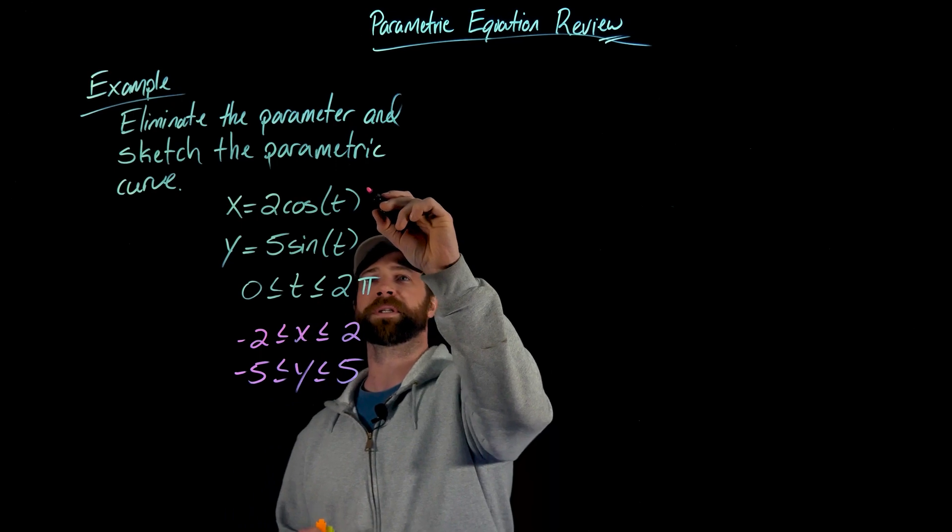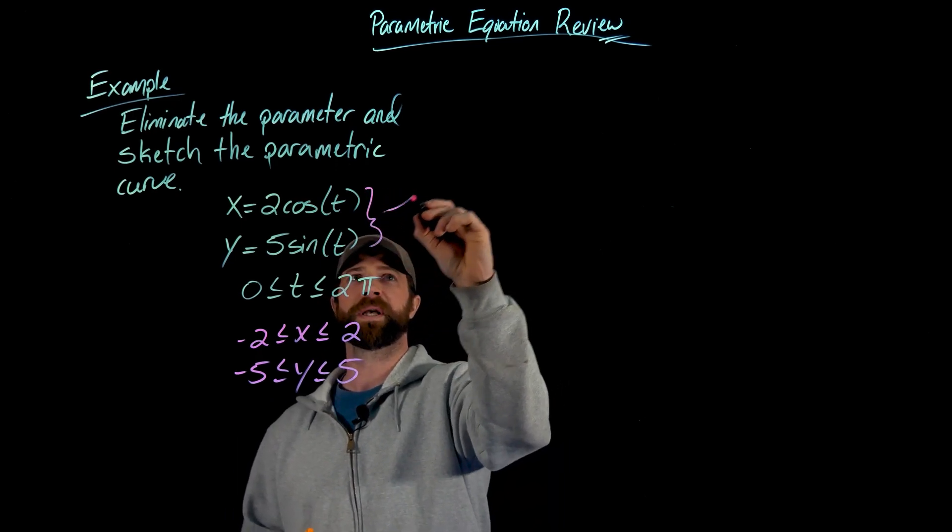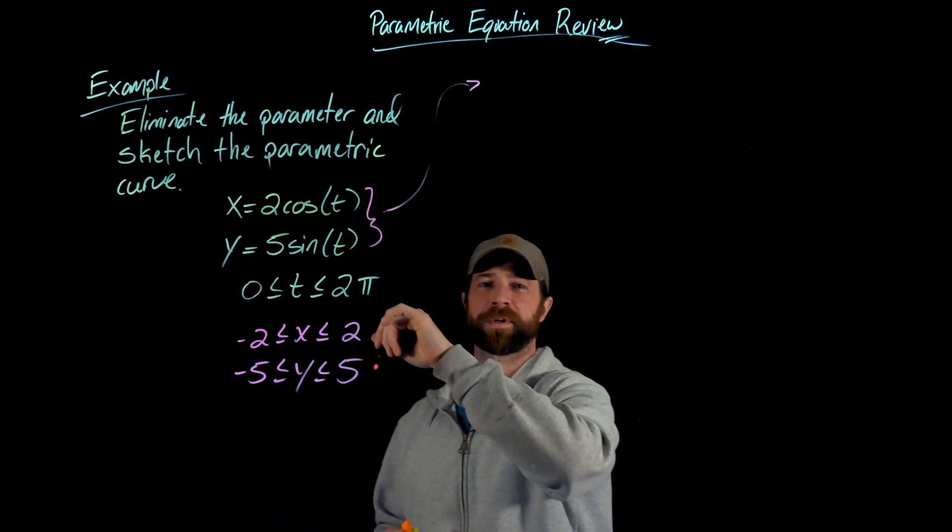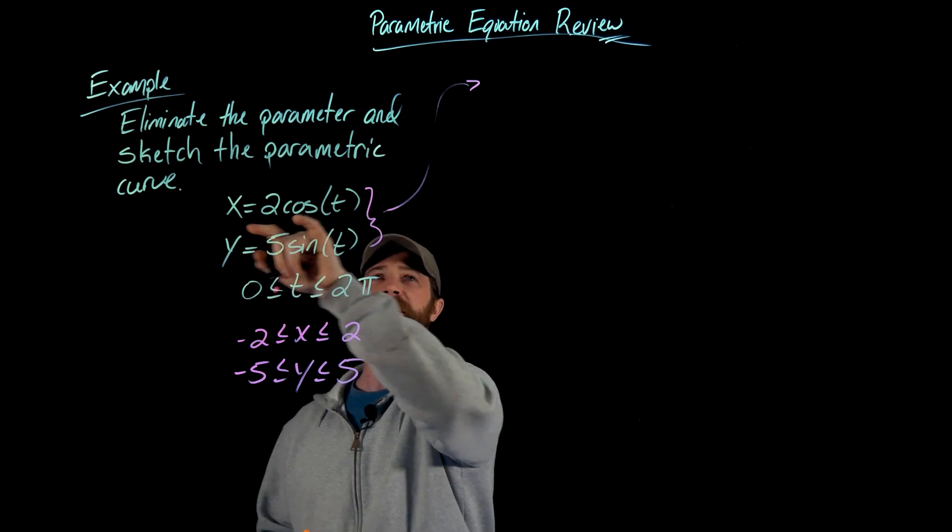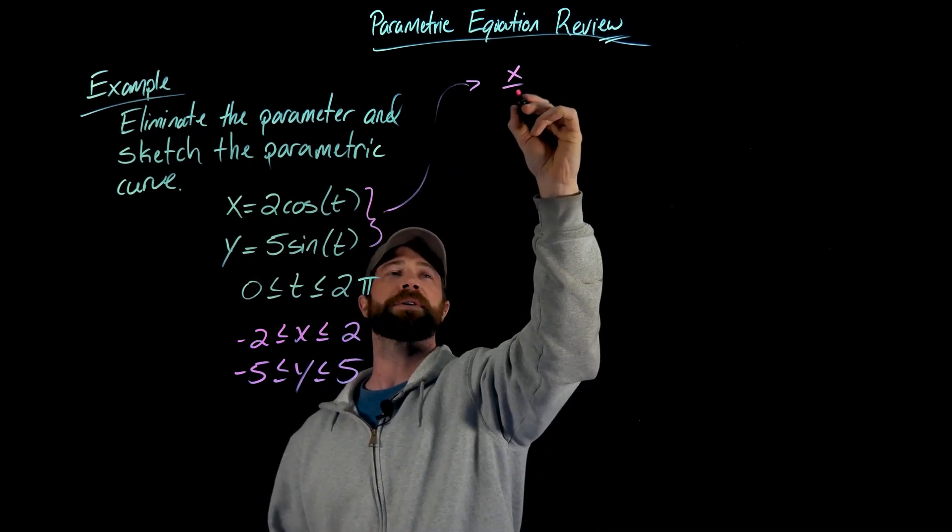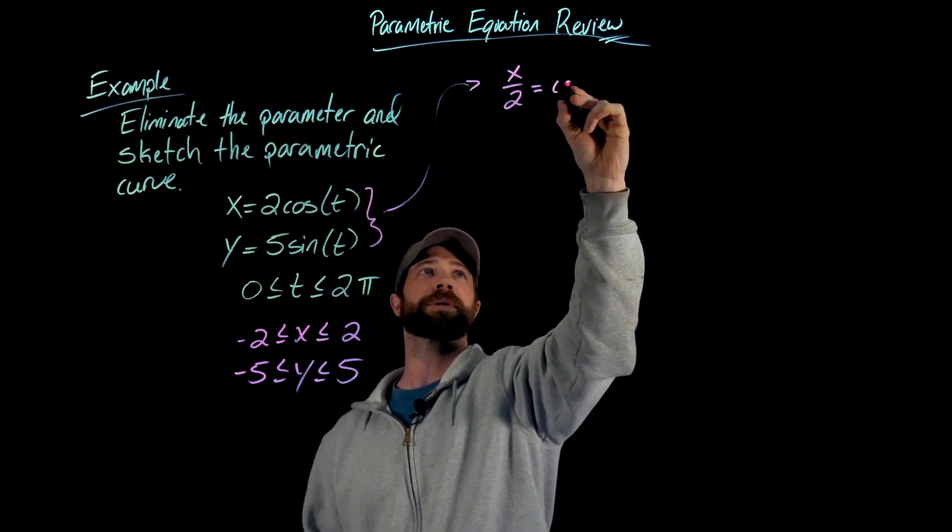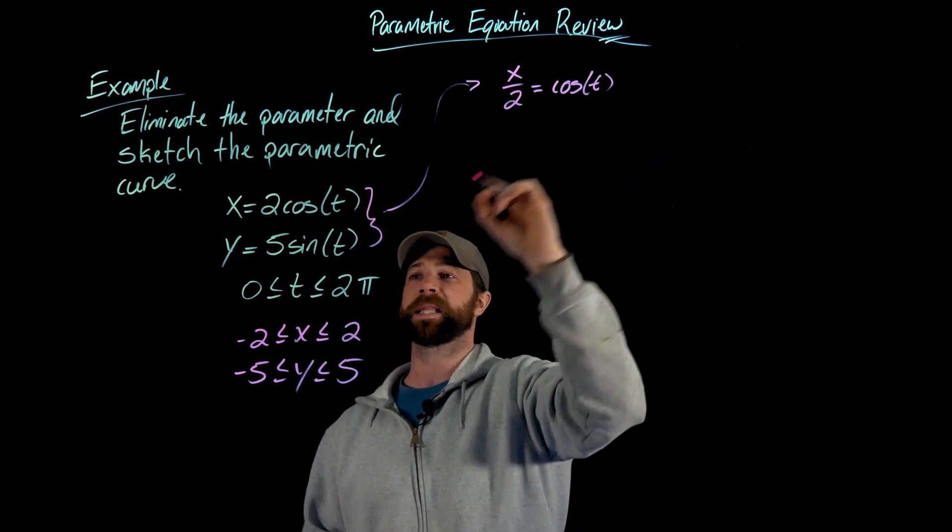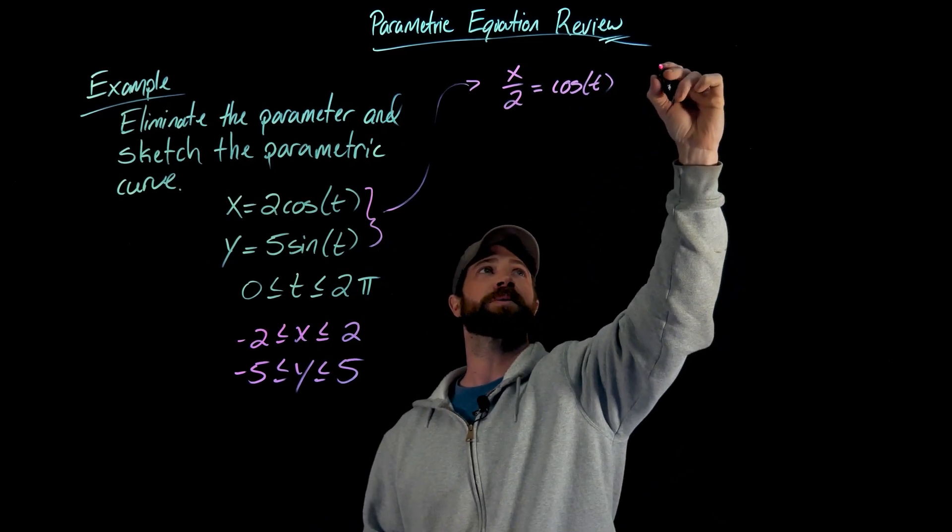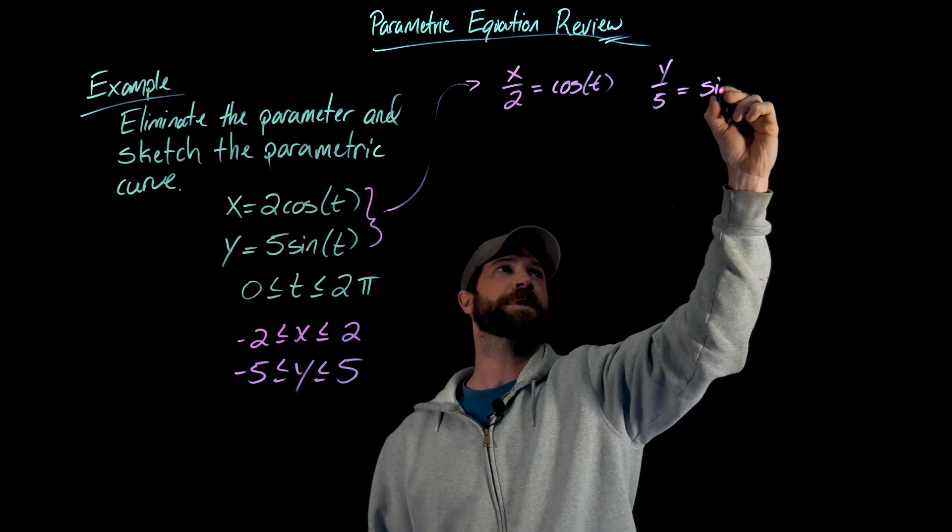What I'm going to do is take these equations and first solve them for cosine and sine. So in this case I would get x over two equals cosine of t, and this second equation gives me y over five equals sine of t.